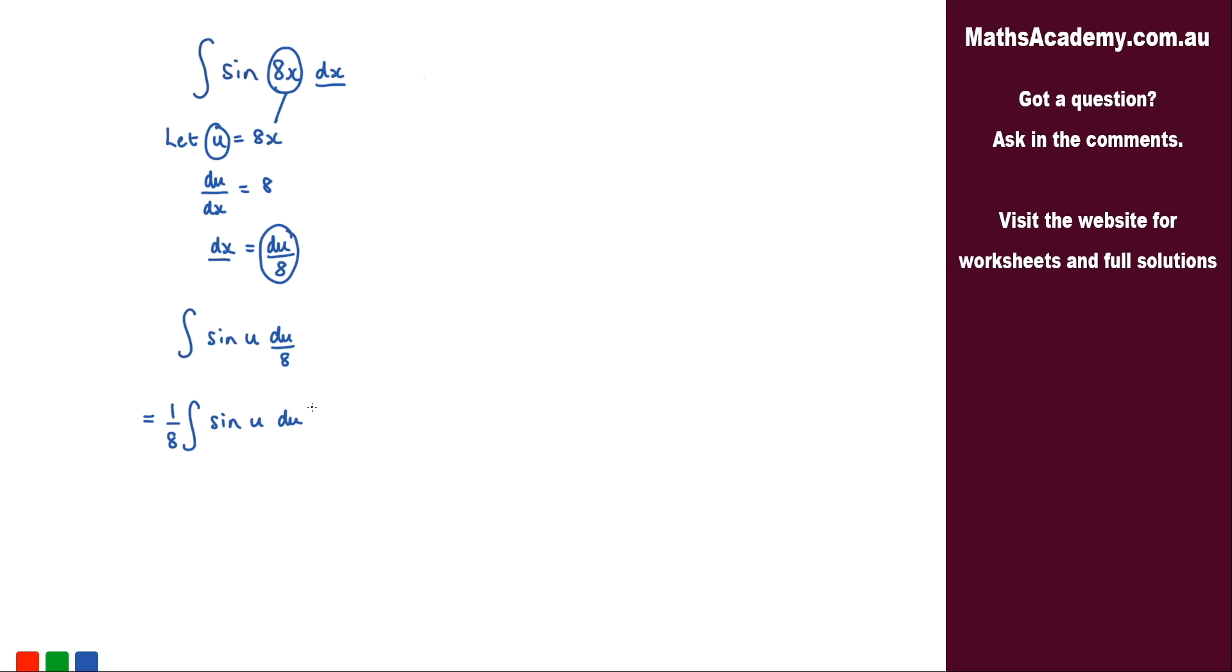The integral of sine u is simply negative cos u. So I end up with negative 1 over 8 cosine of u.